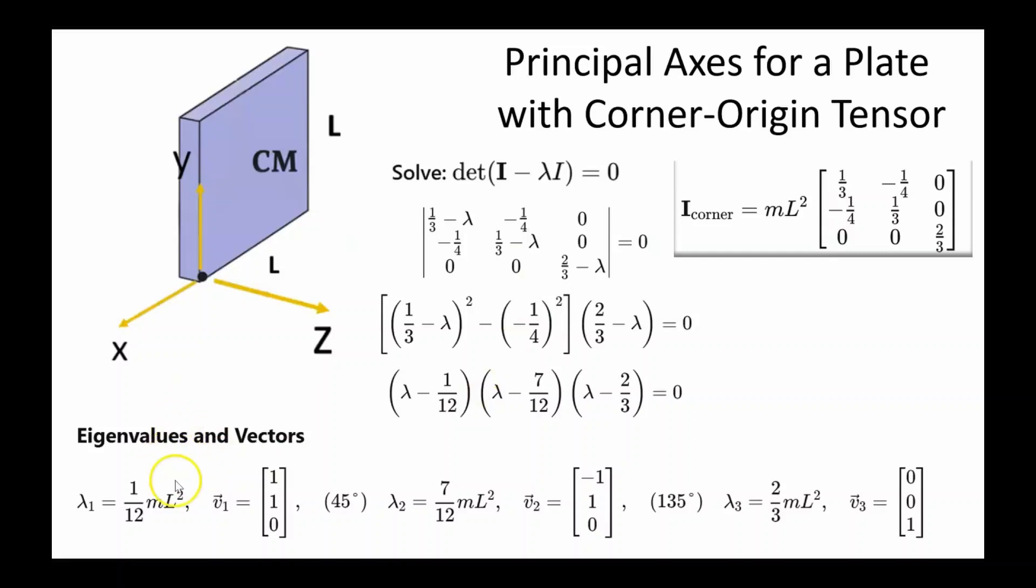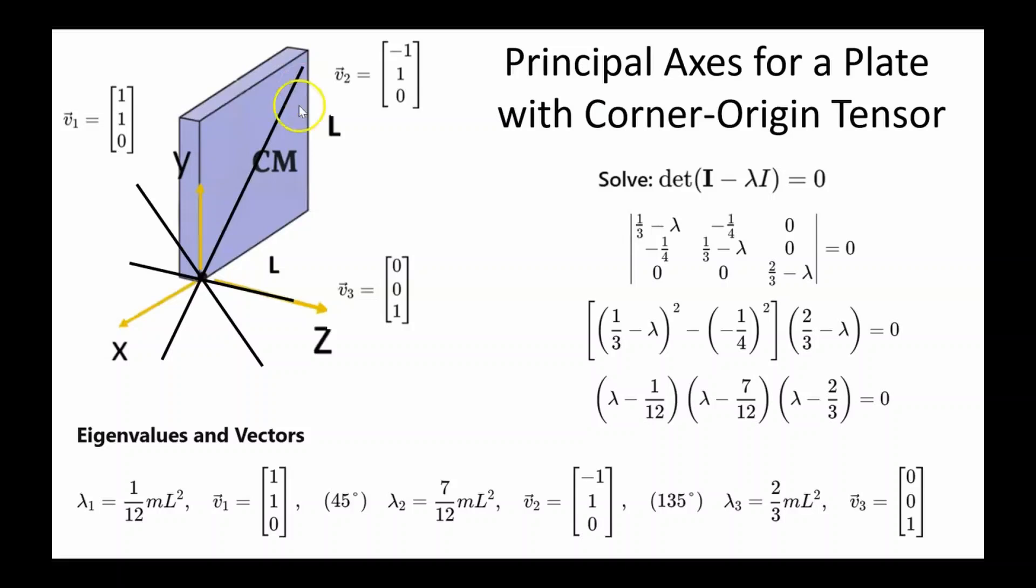In this case one eigenvalue is one twelfth ml squared with the corresponding eigenvector one one zero. Eigenvalue lambda 2 is seven twelfths ml squared with the eigenvector negative one one zero. And eigenvalue 3 is two-thirds ml squared with the eigenvector zero zero one. This is the direction of eigenvector v2. Negative one in the x direction one in the y direction. This is eigenvector v1. And eigenvector v3 is unchanged.